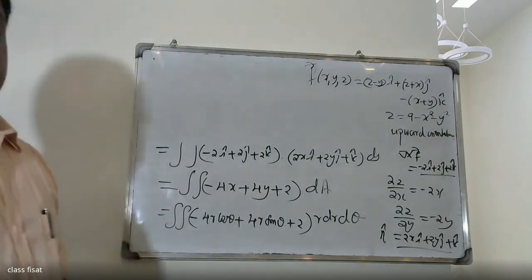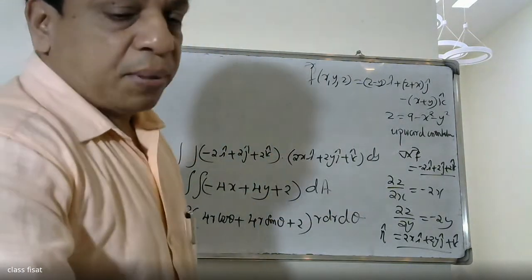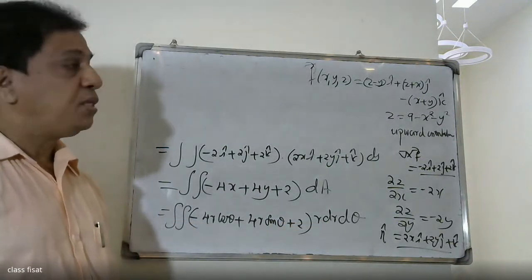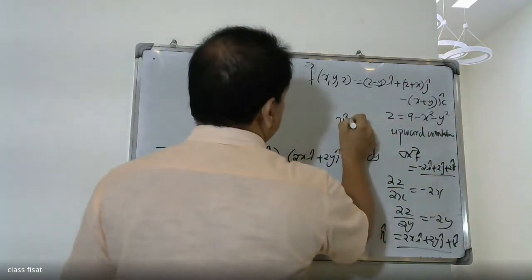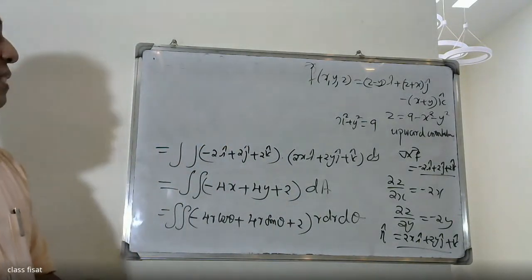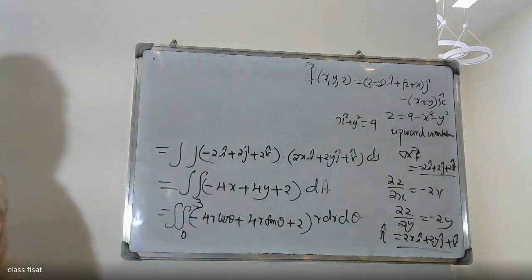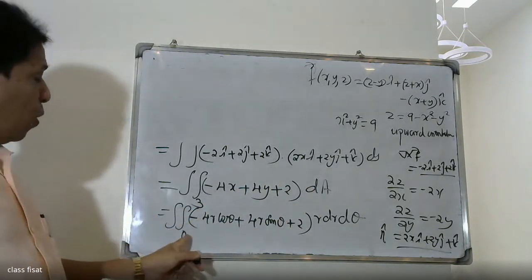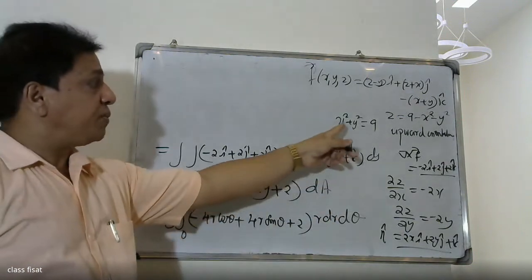Now we will have to write the limits. We have to raise the limit. The center is (0, 0) and radius is 3. Therefore r's limit will be 0 to 3, since x squared plus y squared equals 9. The theta limit is 0 to 2pi.